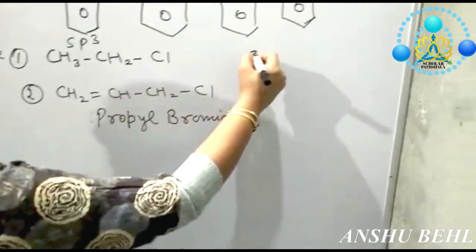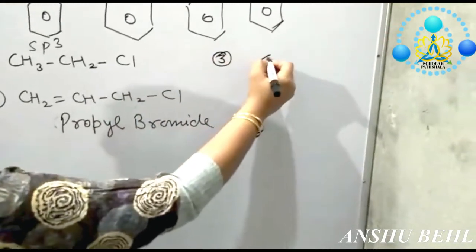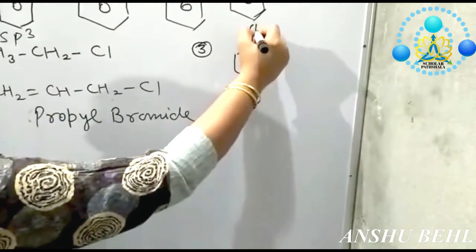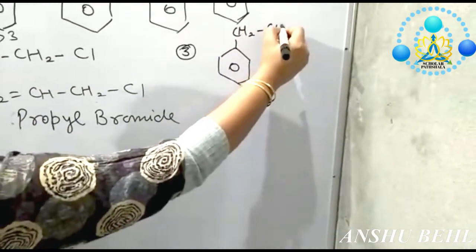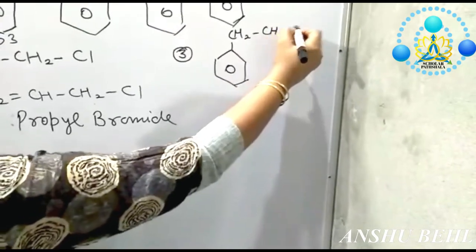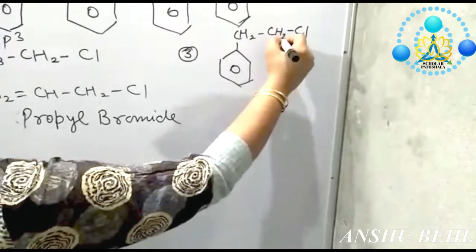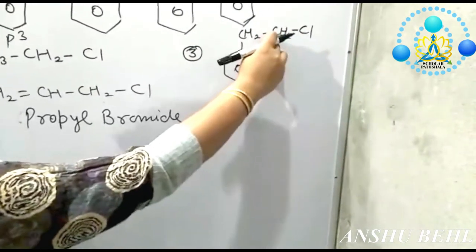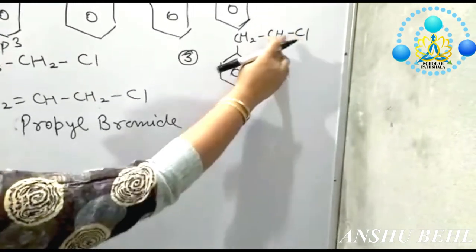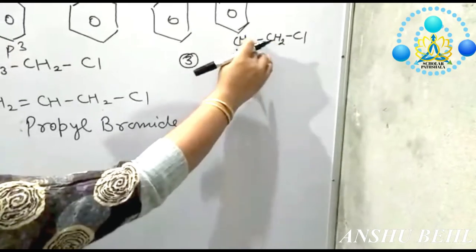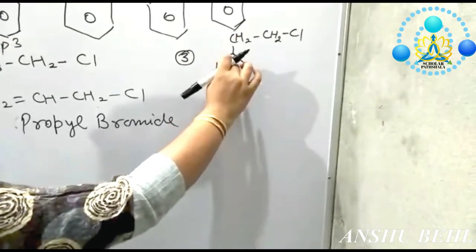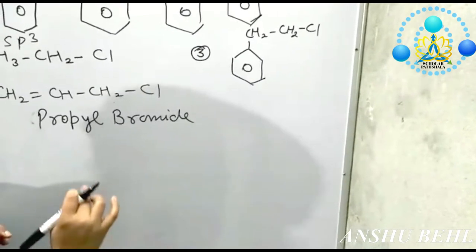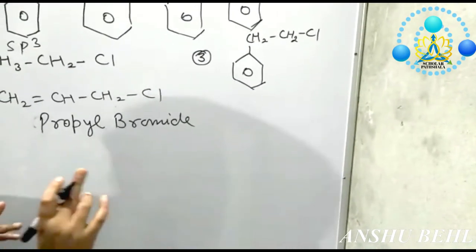A third category of sp3 hybridization involves a benzene ring with a –CH2–CH2–Cl chain attached. Here again, the carbon having chlorine is sp3 hybridized, but the carbon connected to the benzene ring is sp2 hybridized. This type is called allylic carbon.